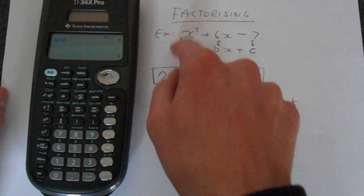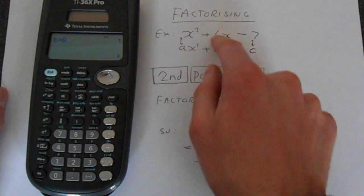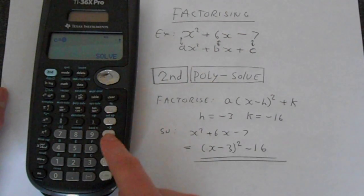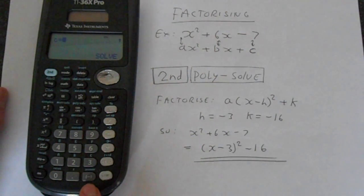And then enter a, b, and c. So we know that a is 1, b is 6, and c is minus 7. And importantly, don't use this minus here. Use this button here, this brackets around the minus, and then put in 7 there, and then go to solve.